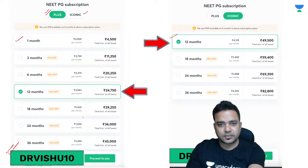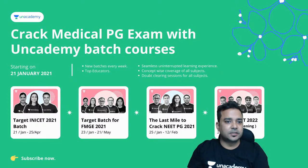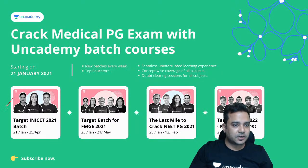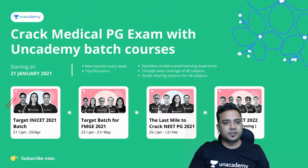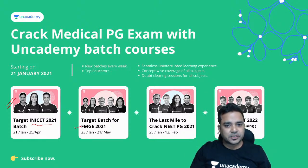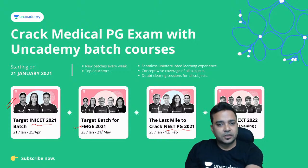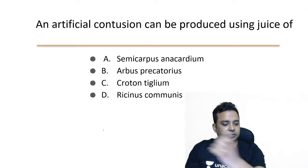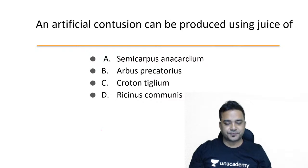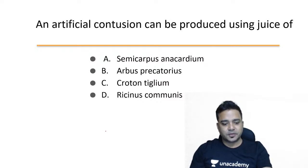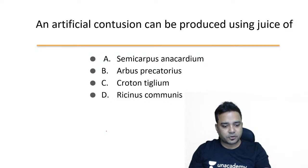Let us start with the question-answer session. These are the batch courses currently in progress to cover all 19 subjects for INICT exams and upcoming NEET PG 2021. The first question for today: an artificial contusion can be produced using the juice of which of the following?